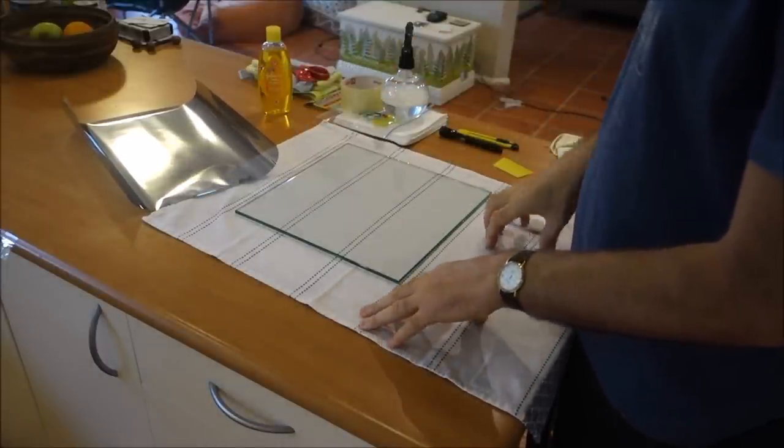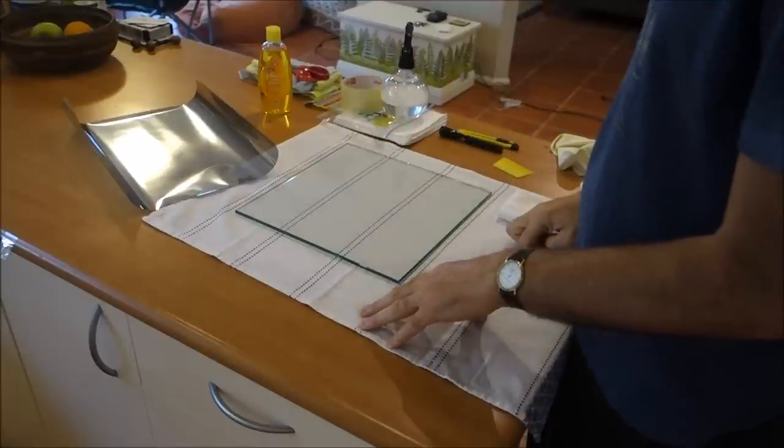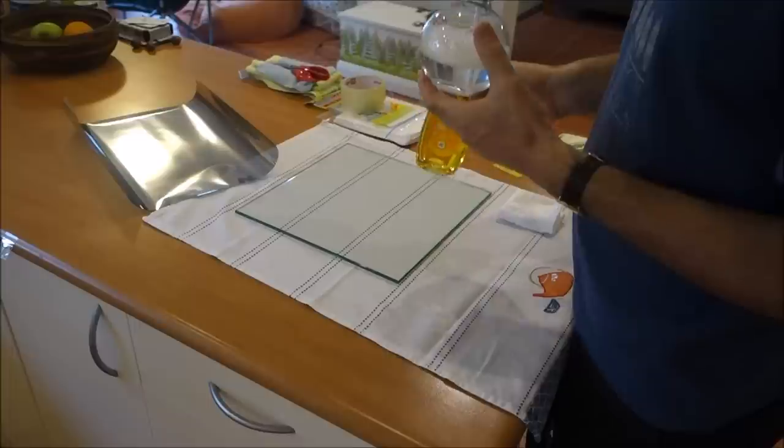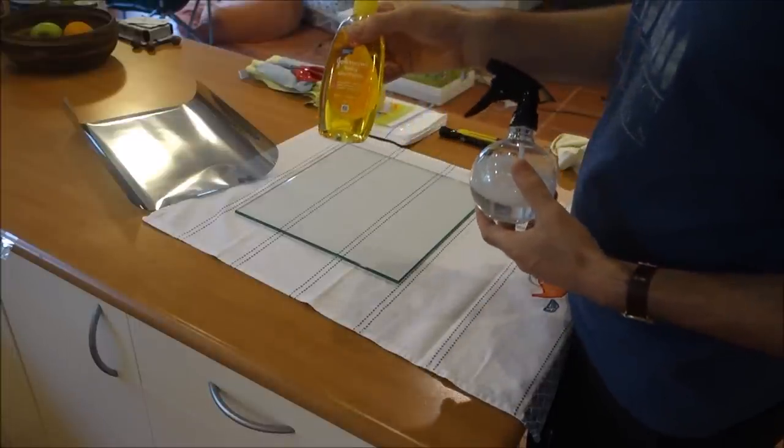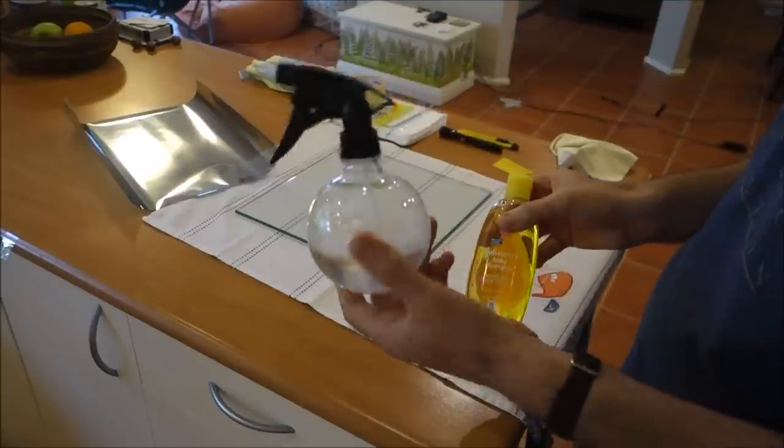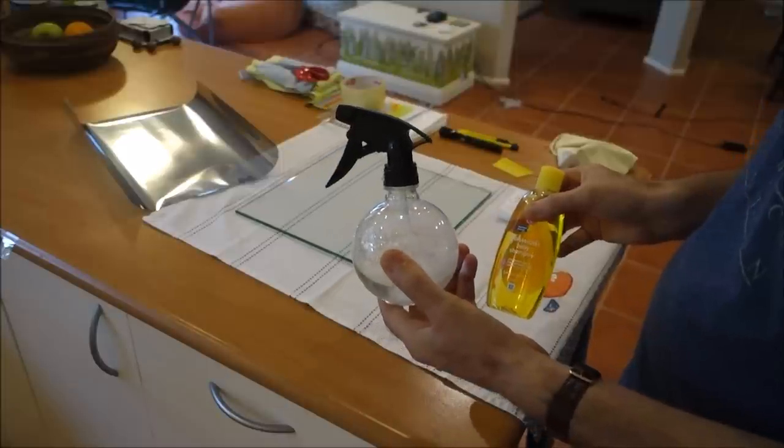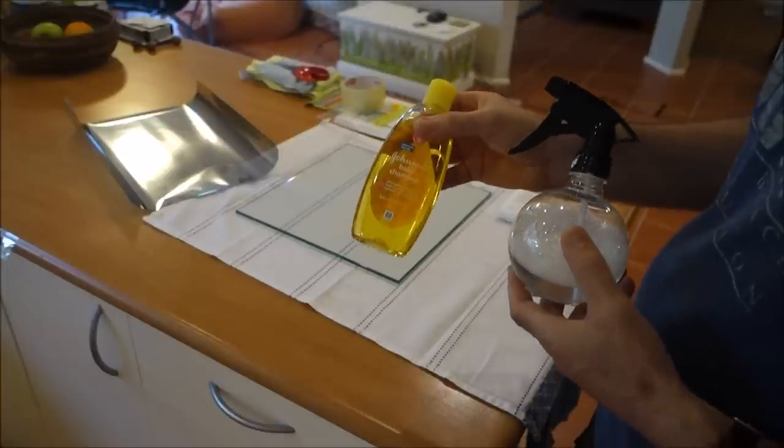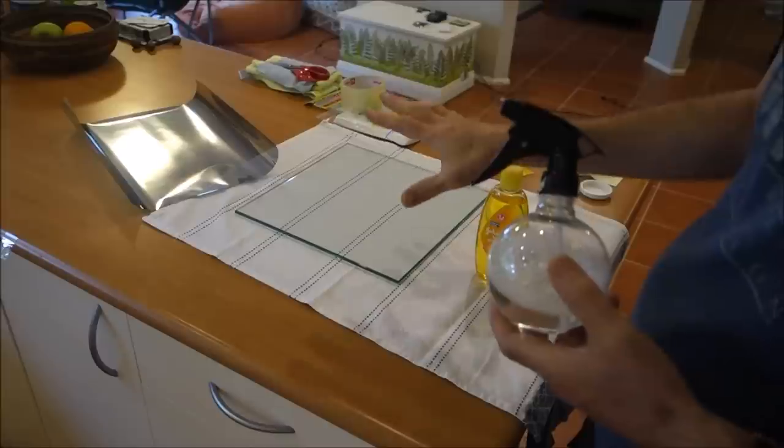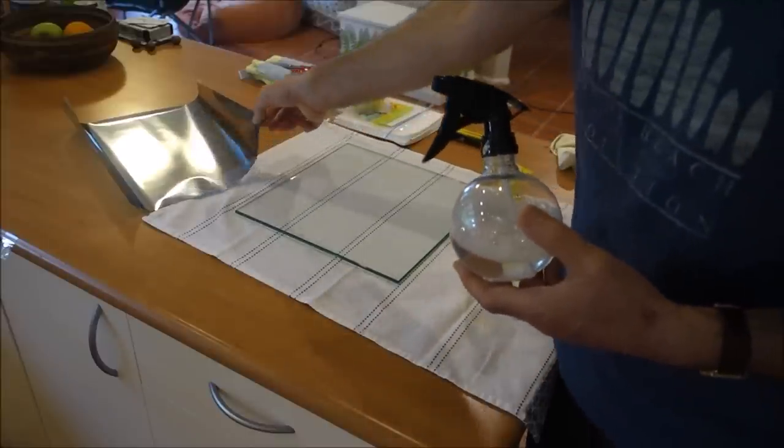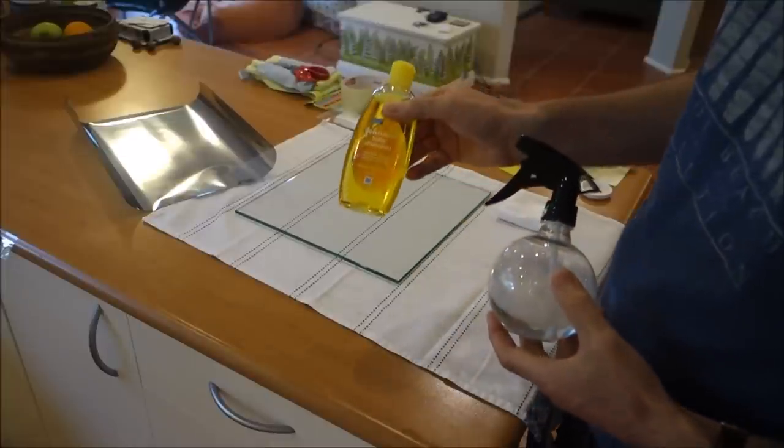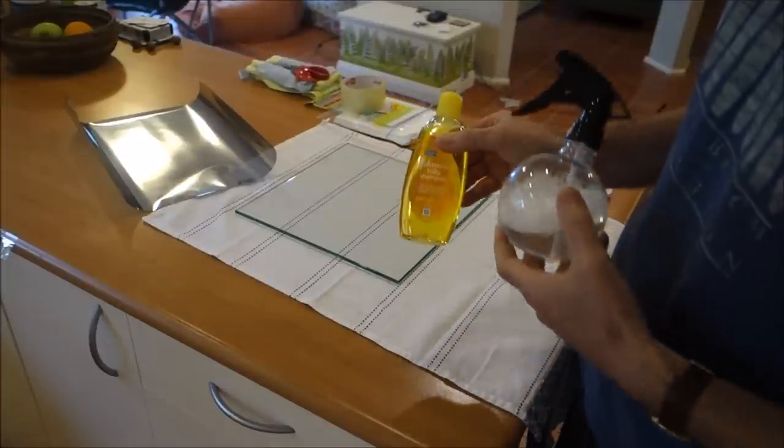But before we start, let's have a look at some of the materials apart from the glass and the window tinting. The first one, and probably most important, is we need a solution of water and Johnson's Baby Shampoo. We're talking only about half a teaspoonful in an atomizer sprayer like this. It dries leaving no residue. You shouldn't use any cleaning fluids such as ammonia-based glass cleaners because that will affect the epoxy on the film. It's just a soap solution. This is the best to use.